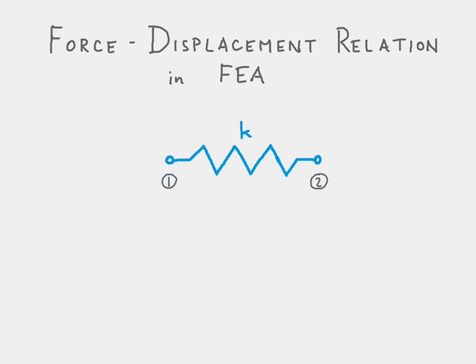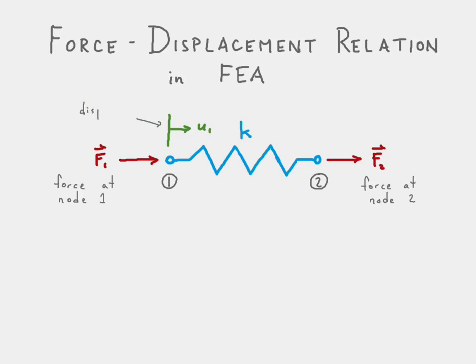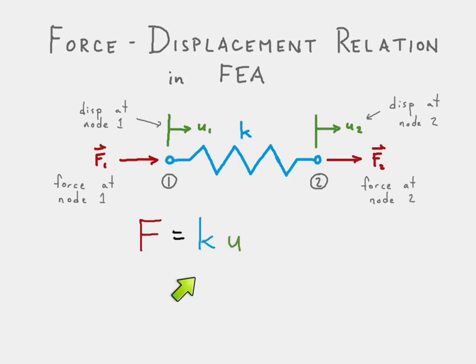We have the spring itself that connects node one and node two. We have the force at node one, the force at node two, the displacement at node one, and the displacement at node two. And that is our spring stiffness relationship between the force and the displacement.